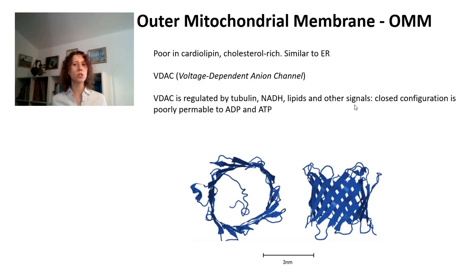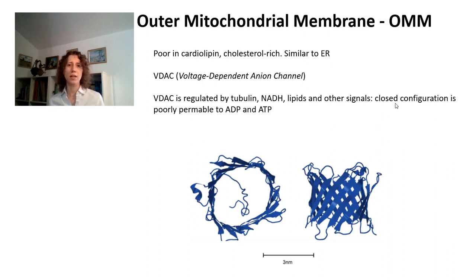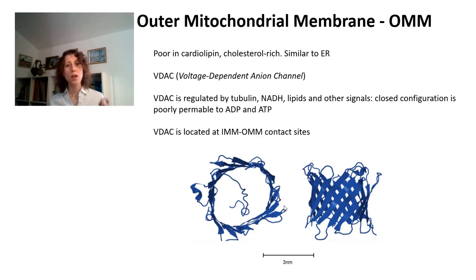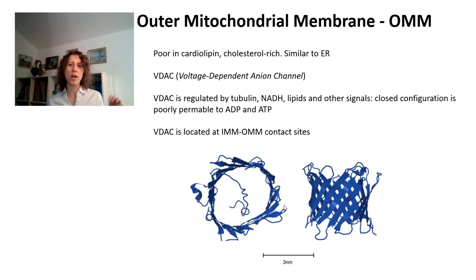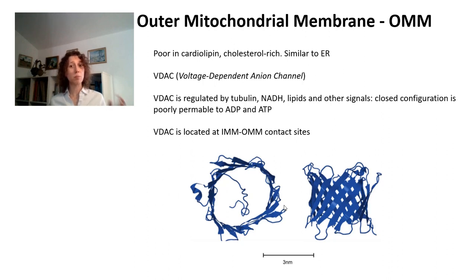VDAC can have a closed configuration or an open configuration, and when it's closed, it's poorly permeable to ADP and ATP, so it's regulatory of oxidative phosphorylation. VDAC is located mainly in the contact sites between the inner and the outer mitochondrial membrane - those places in which the inner and outer mitochondrial membrane are closely related - and it's also regulated by the presence of proteins at those contact sites.